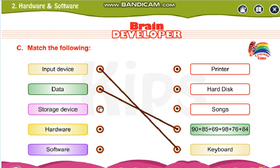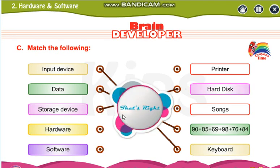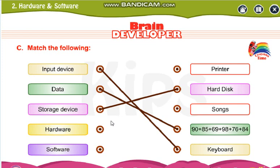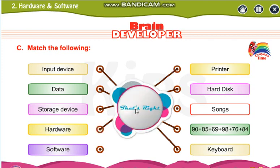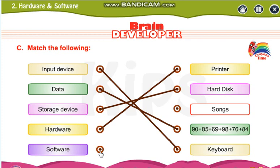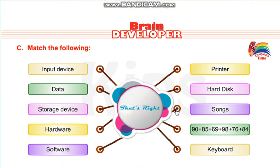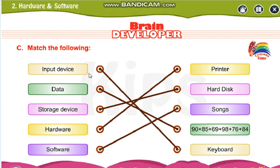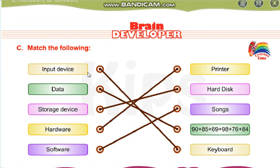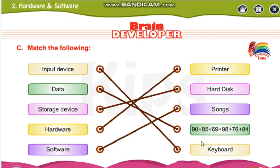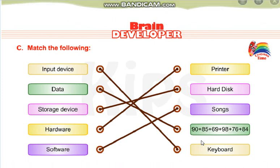Storage device — what is the storage device? Hard disk is your storage device. Hardware — what is hardware? Printer is your hardware. And software — songs and programs stored in a computer are your software. Input device is a light biscuit color, so keyboard is also that color. Data is green, so 90-85 is also green. Color matching is also there, so do it after this video.